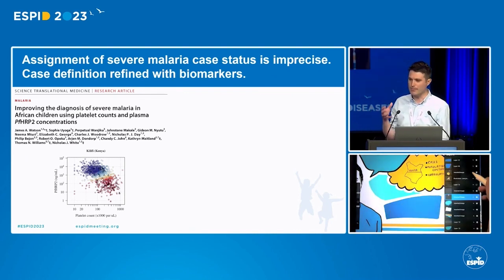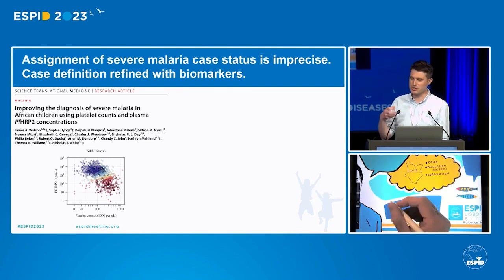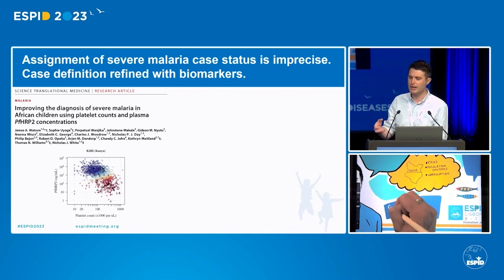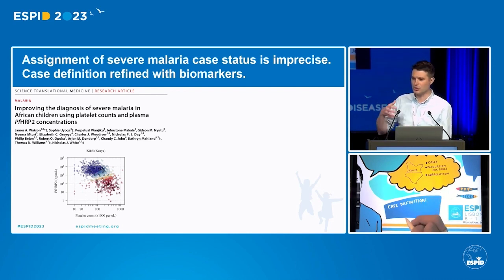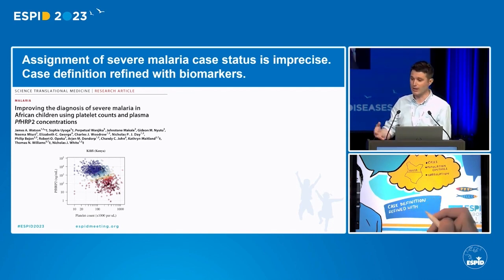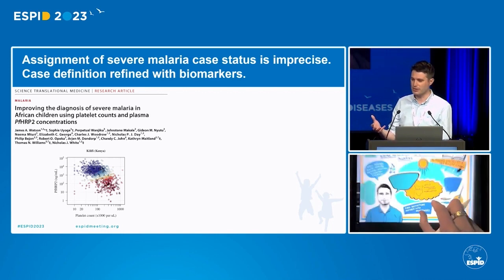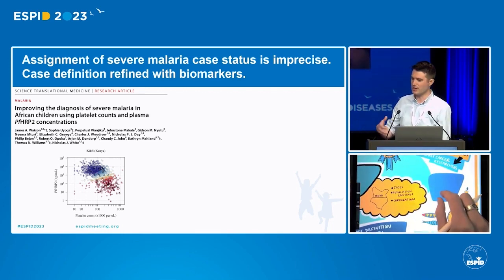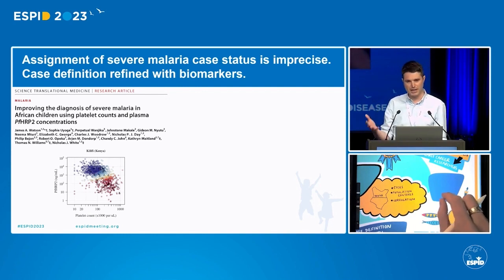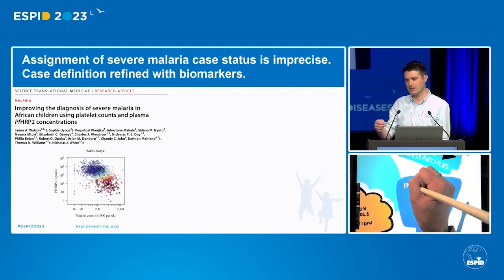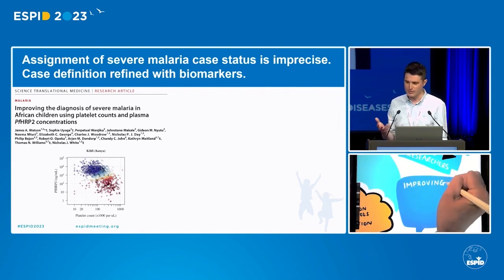While we were thinking about how we might do that, James Watson — a statistician in Oxford — had been thinking about a related problem: the poor specificity of a clinical diagnosis of severe malaria in high-burden settings. The problem, as James and others have found, is that children in high-burden settings will often have asymptomatic parasitemia. So when they're critically unwell and have parasites, those parasites can be directly causal of their disease, or they can be incidental. James has been generating models — using PFHRP2 and platelet count on admission — to give a probability for each child that they have true severe malaria.